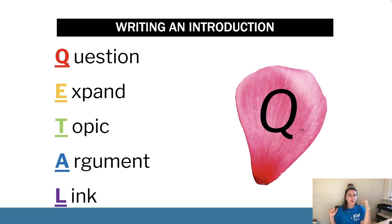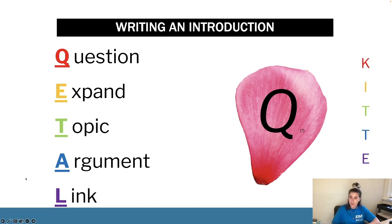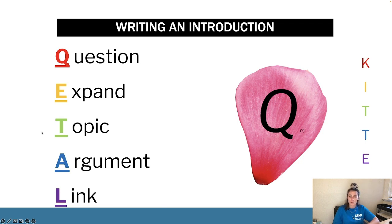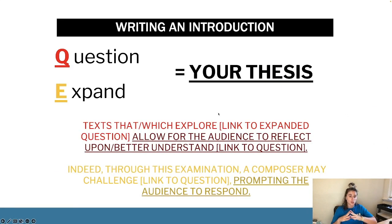This is the order of an introduction, and as you can see by the colors it almost mirrors KITTY. Keywords, to an extent, is your 'question'; 'expand' is almost like your interpretation or topic. Your argument is like your content and your link is your elective. So your topic is what you're writing about, your argument will be your body paragraphs. Let's go into what the first two are.